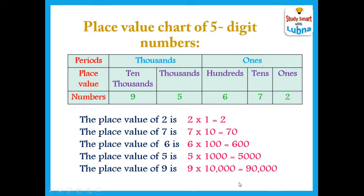So the place values of the digits in this number are: 2, 70, 600, 5,000 and 90,000.